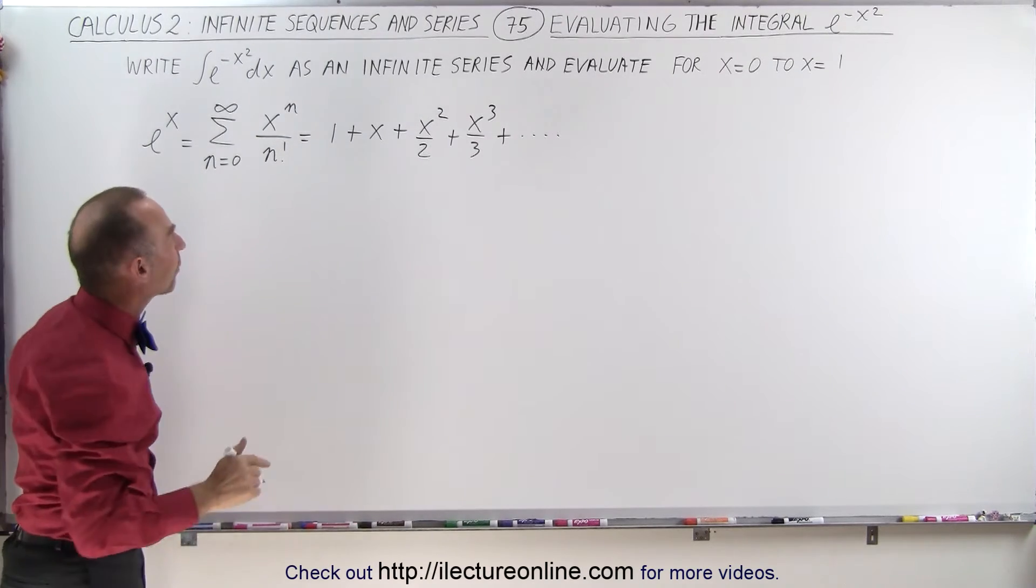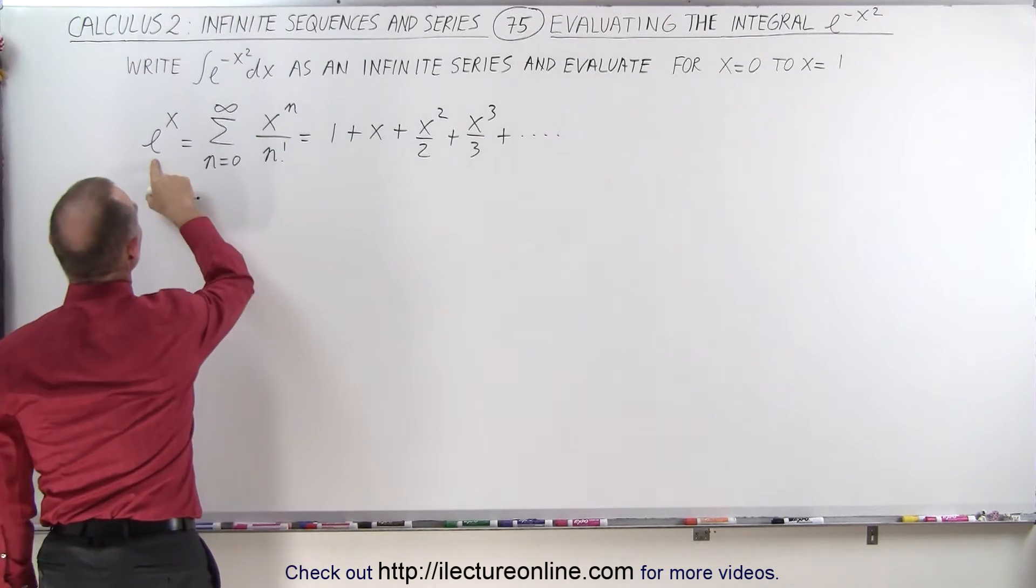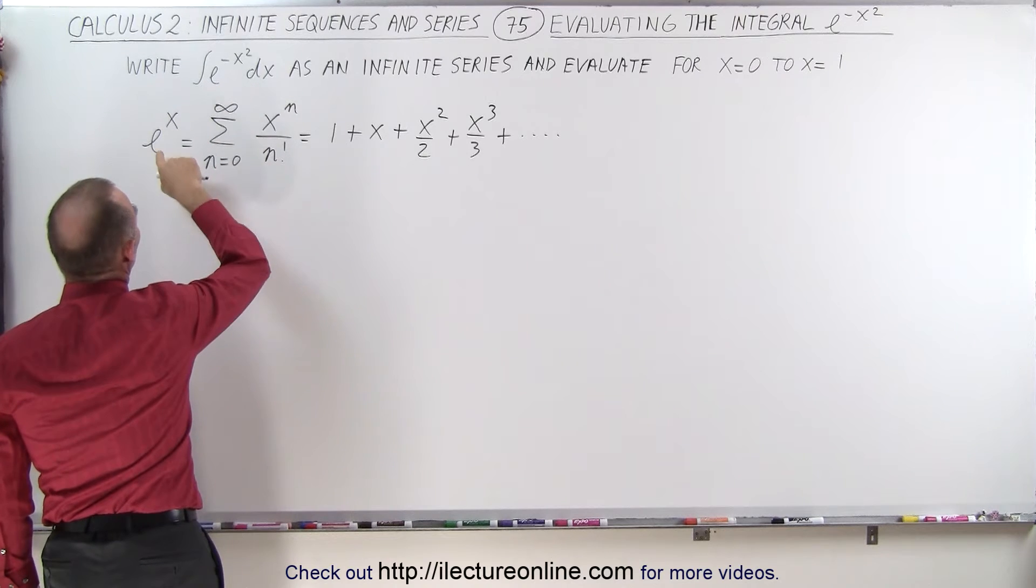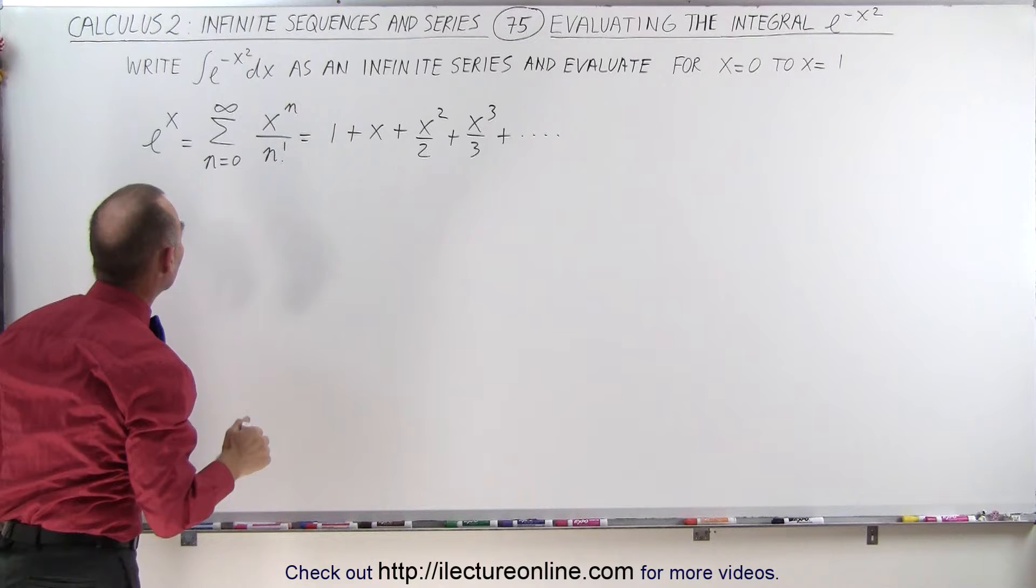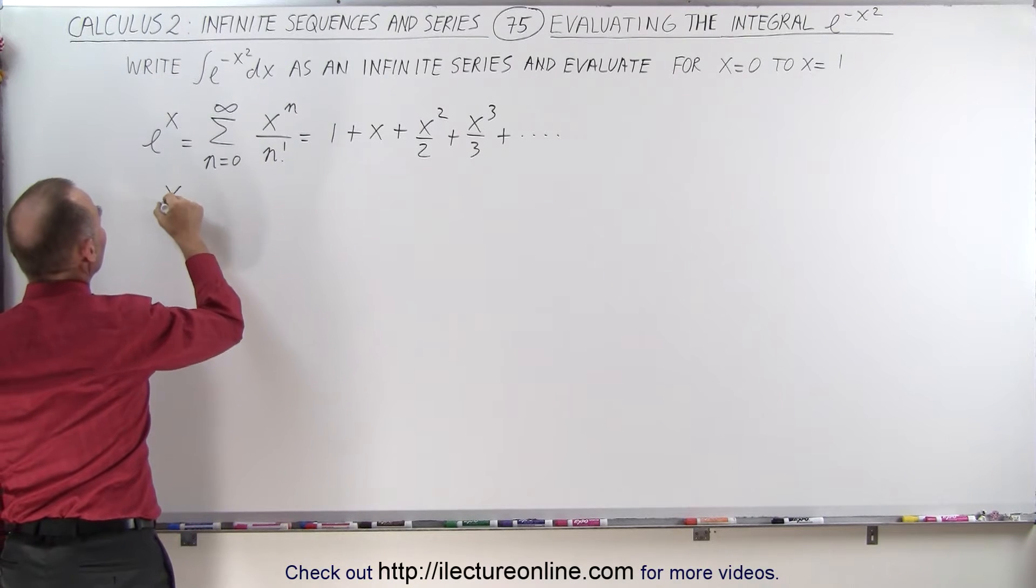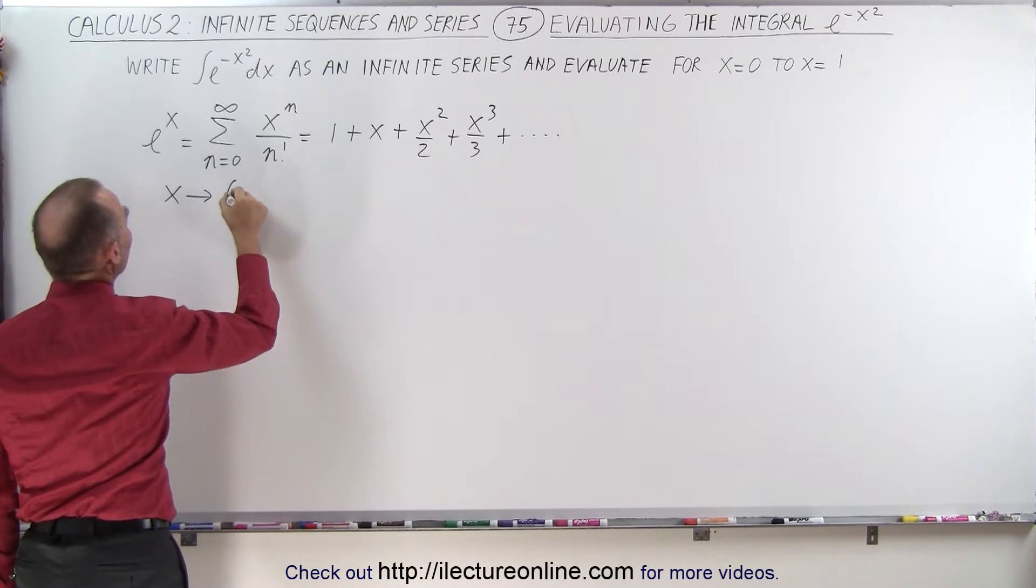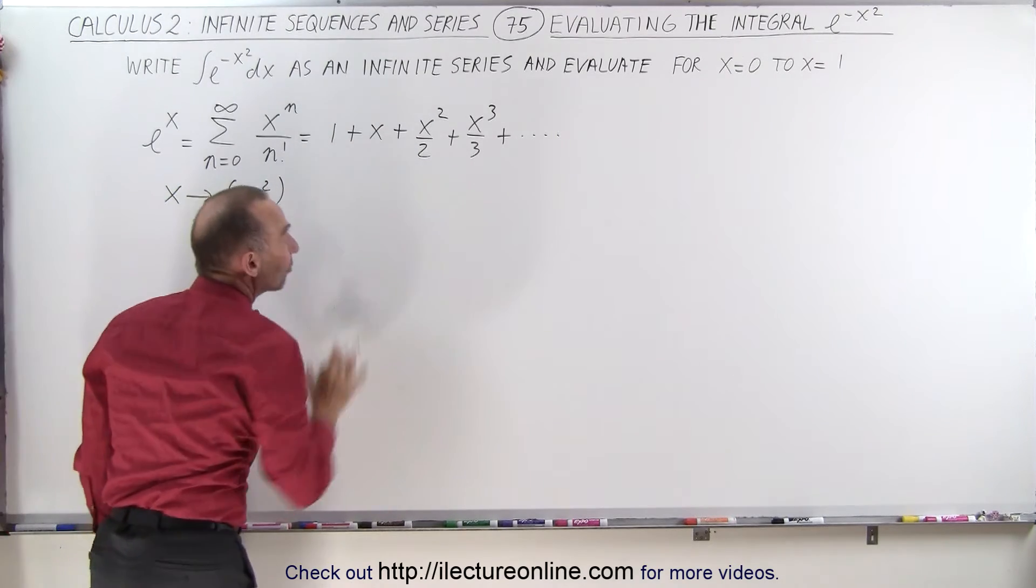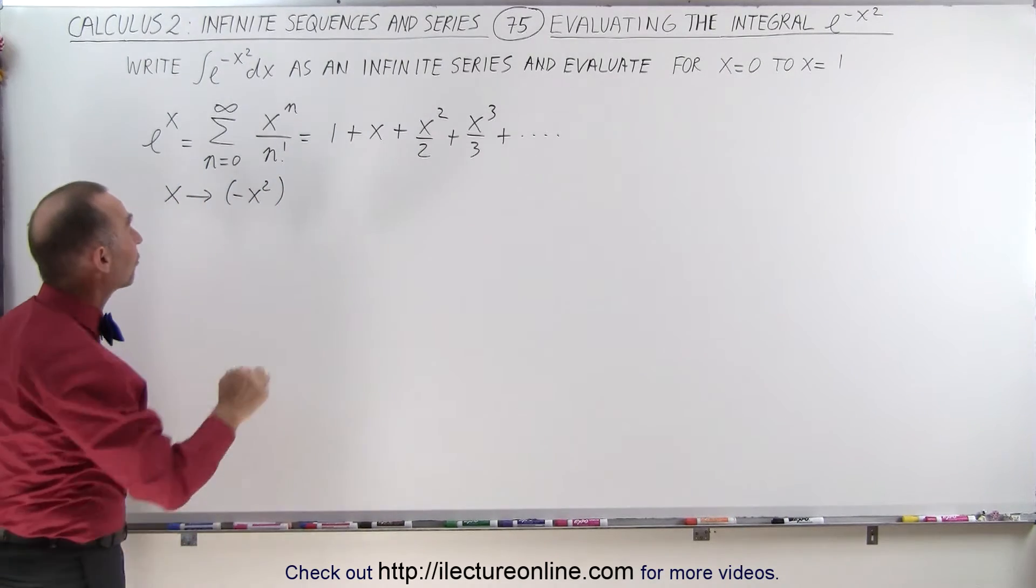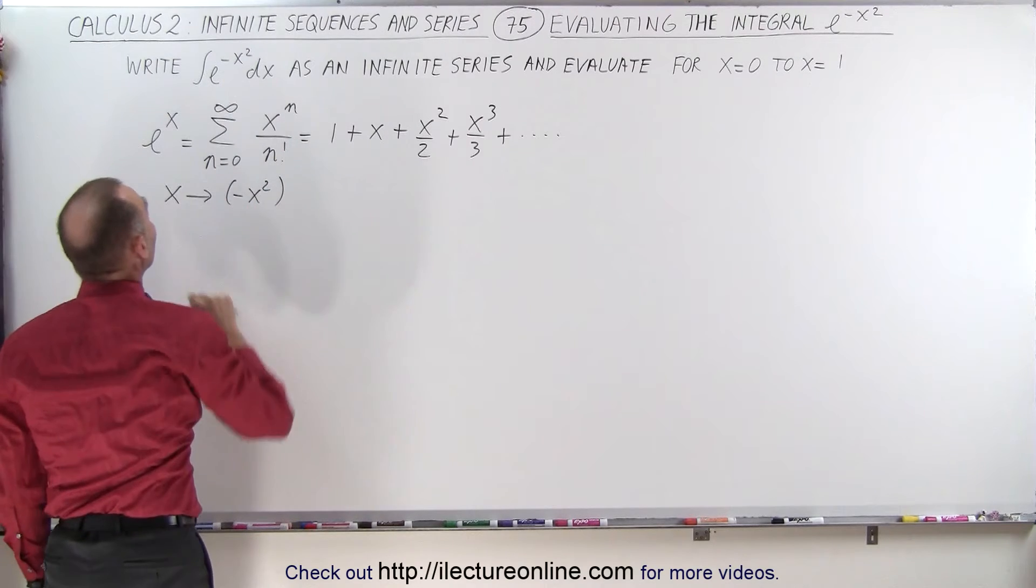Now, can we draw a relationship between this and this? You can see, well, here you have e to the x, here you have e to the minus x squared, so if we take every x and replace it by a minus x squared and then we plug that into our infinite series, now we have an infinite series that represents e to the minus x squared.